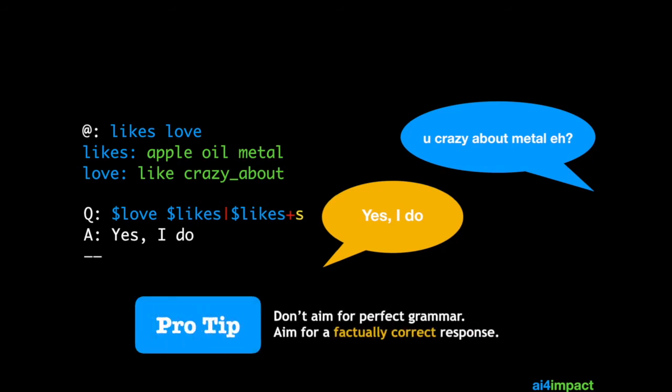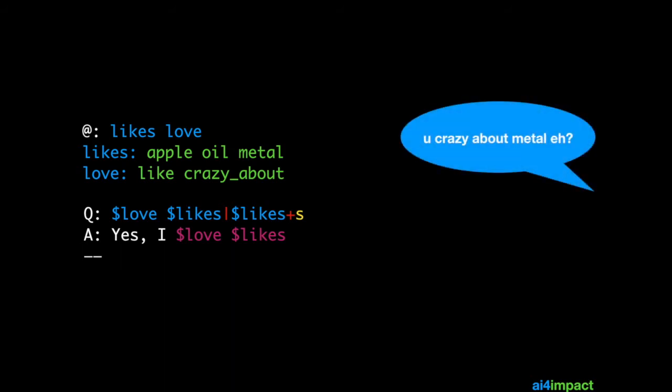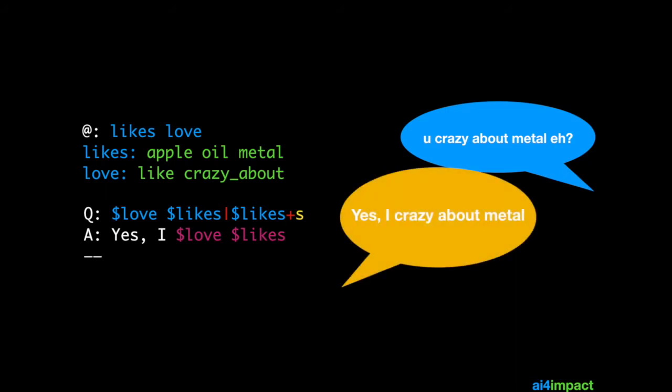If you notice you shouldn't aim for perfect grammar. What you should aim for in your bots is a factually correct response. What you can also do is to put the like or love or whatever match you have back into your answer. So this is no longer a match but just a repetition of what the user has already told you. For example if he says you crazy about metal eh? Then the response in this case would be yes I crazy about metal.